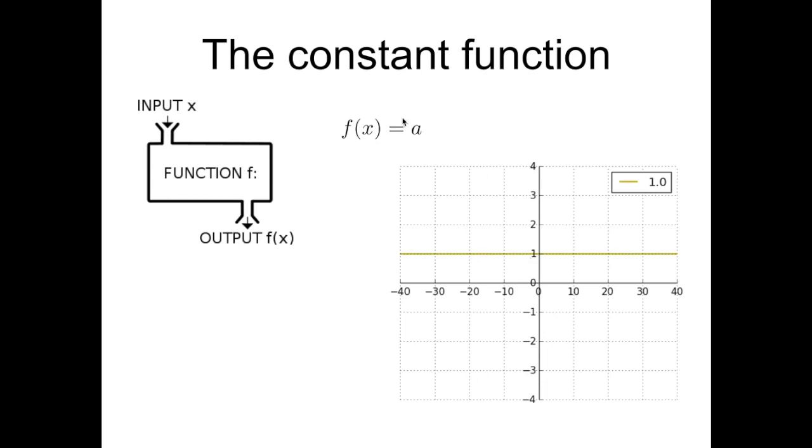If this a parameter is going to be negative, well this function, this straight line, horizontal straight line, will be going down and will be located in the negative quadrants of this Cartesian plane.